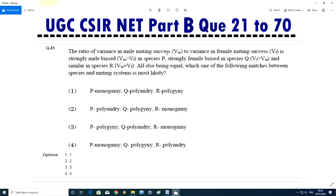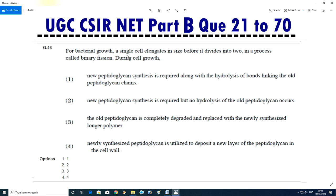Question No.46 - The ratio of variance in male mating success to variance in female mating success for a species is called. Direct answer is third.